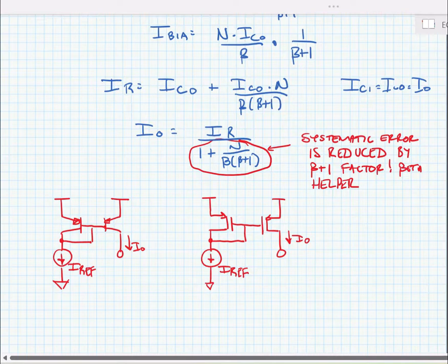In both of these cases, we call these current sources because the current is being sourced from the supply, whereas in the NMOS cases or the NPN cases, we call them current sinks.